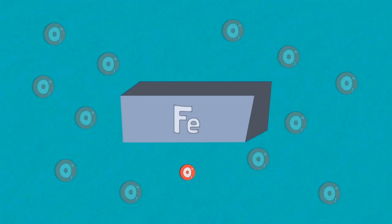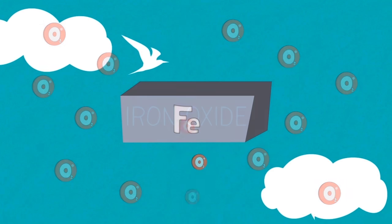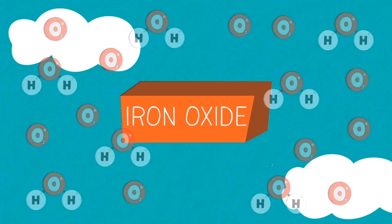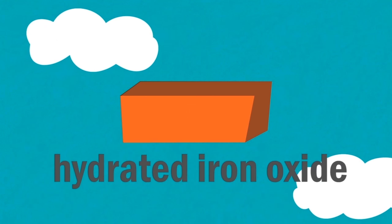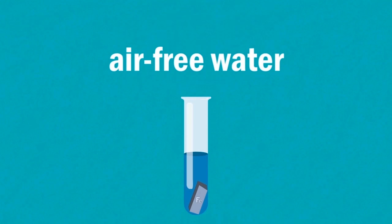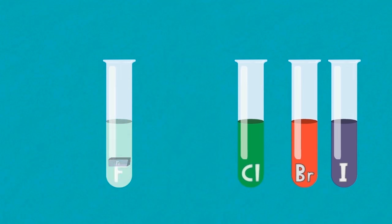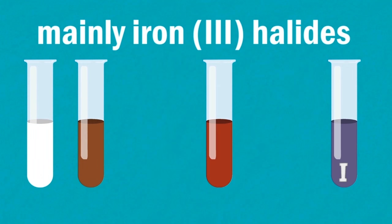In summary, iron reacts with oxygen in the air to form iron oxide commonly known as rust. It may also react with moist air to form a hydrated iron oxide. Iron will not react with air through water but will rust if there is air in the water.